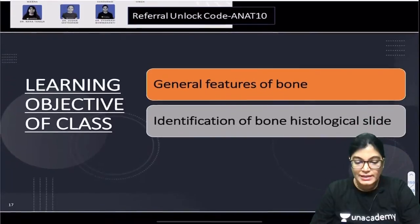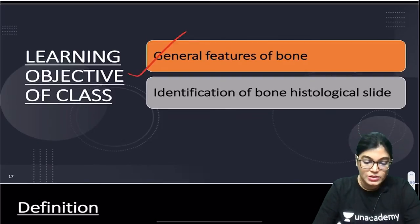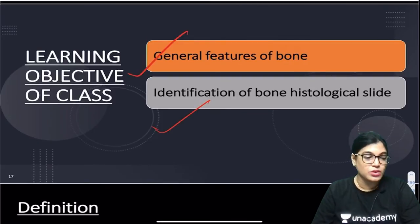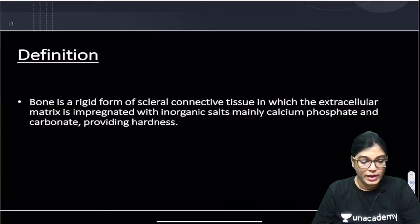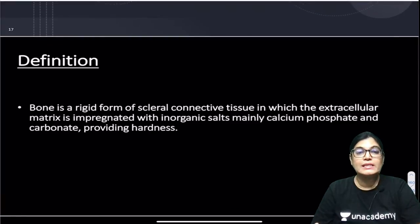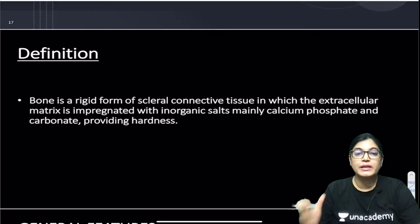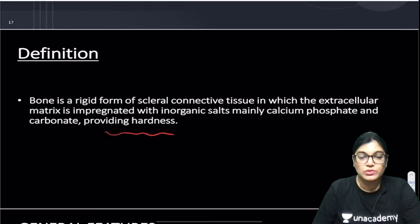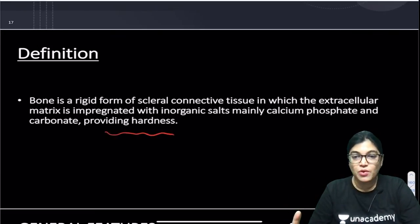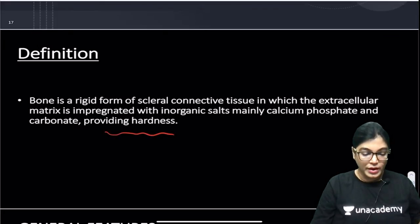Before starting the session, I would like to tell you the learning objectives. In today's session I will cover the general features of the bone and identifying features of the histological slide. Definition: bone is a rigid form of skeletal connective tissue in which the extracellular matrix is impregnated with inorganic substances — calcium phosphate is included in the ground substance, giving hardness to the bone. It is a special form of connective tissue.